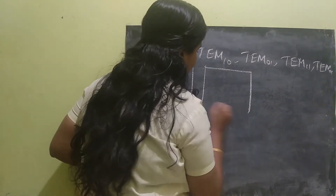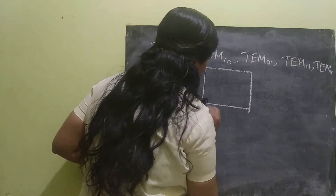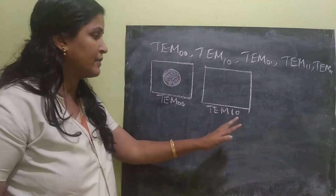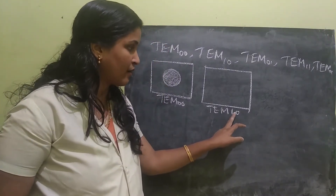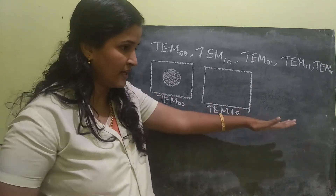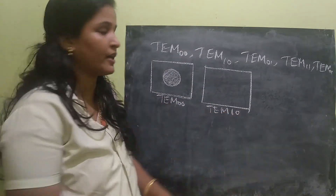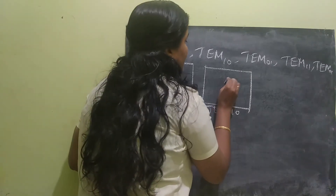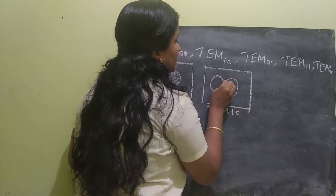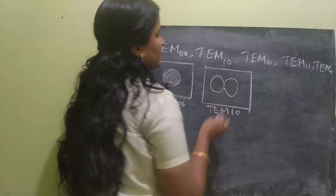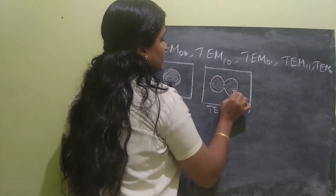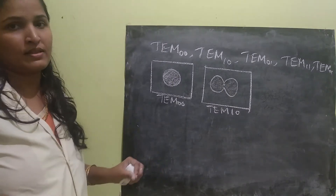Now let's draw TEM10 mode. In the name itself it is there — while scanning horizontally, there will be one cut. So the wave pattern will look like two lobes side by side. This is the TEM10 mode.